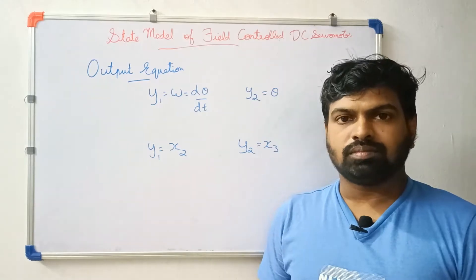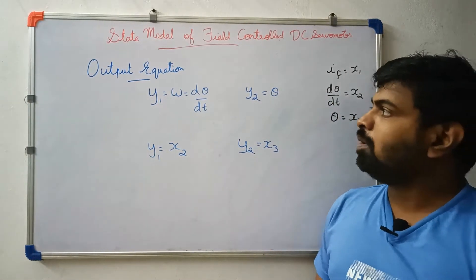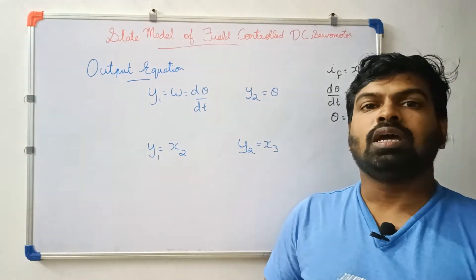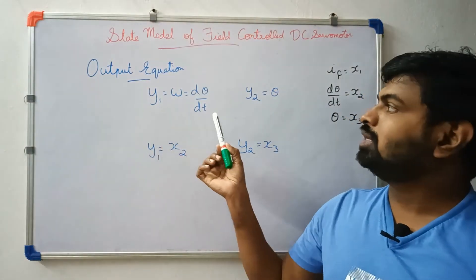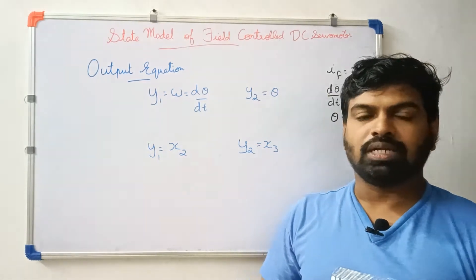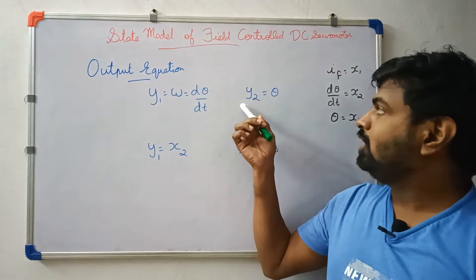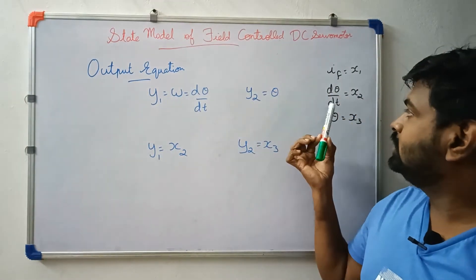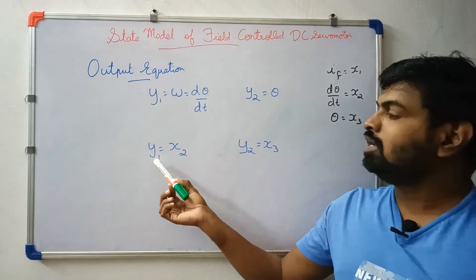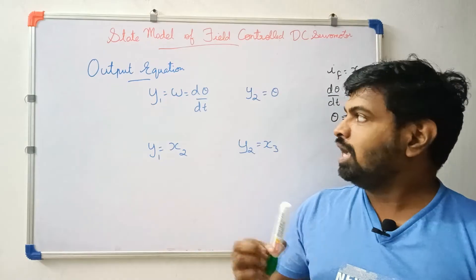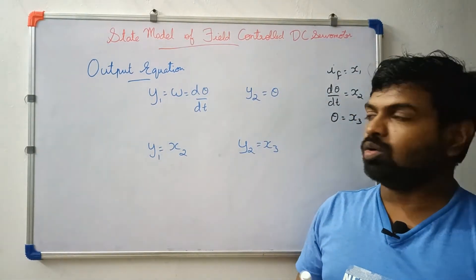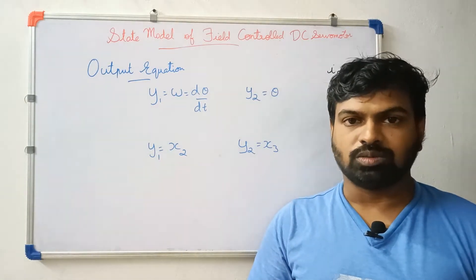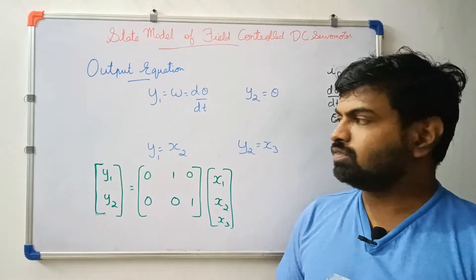Now let's look at the output equation. The outputs are angular velocity and angular position. y1 = ω = dθ/dt, and y2 = θ (angular position). So y1 = x2 and y2 = x3. This is the output equation in matrix form.